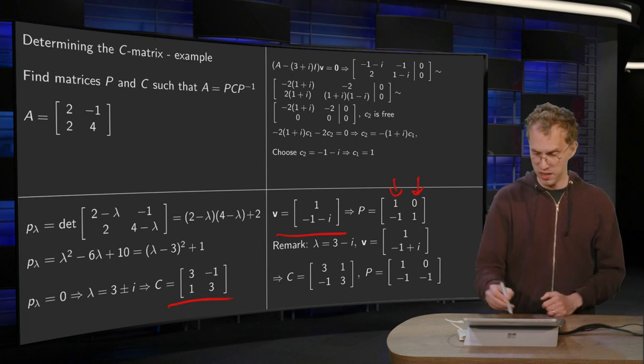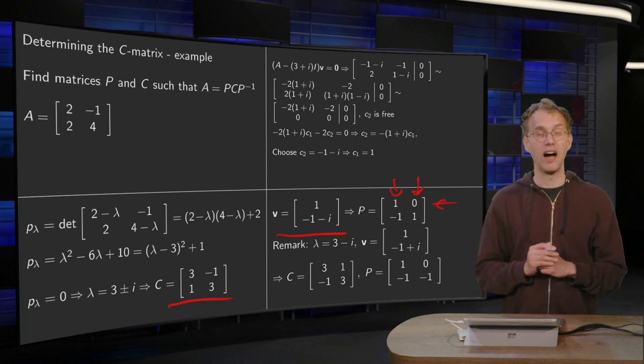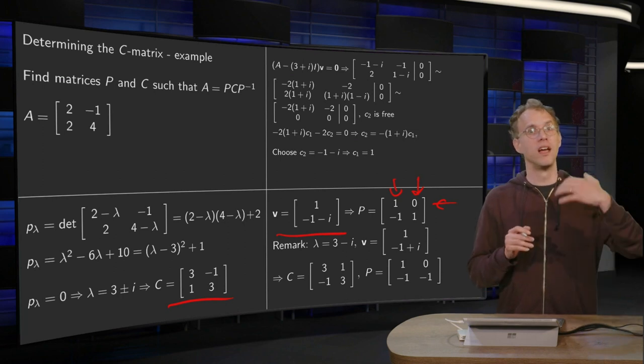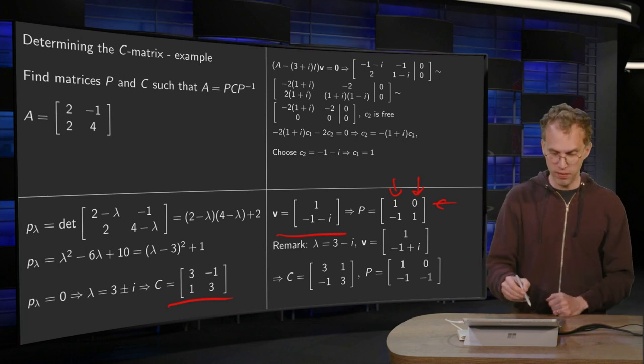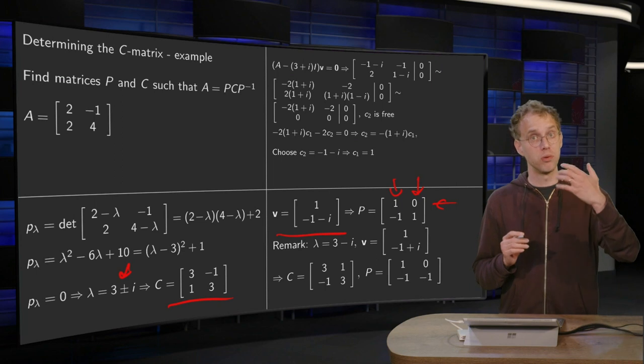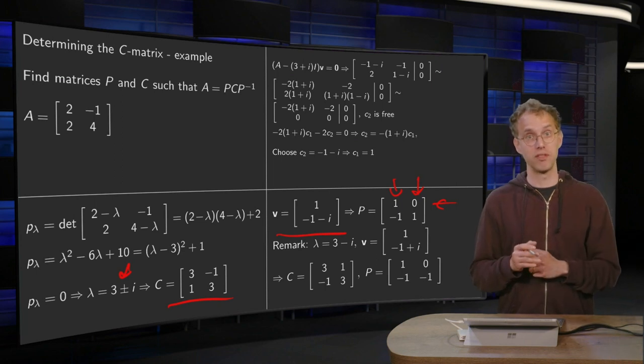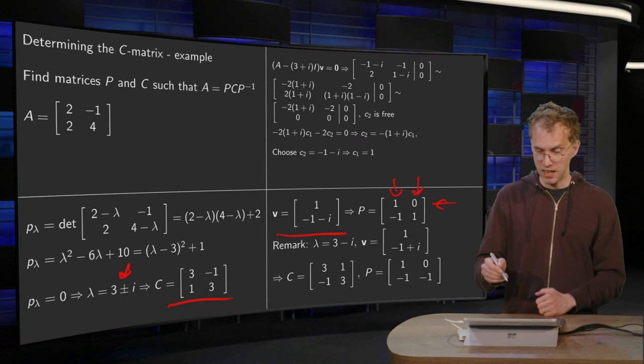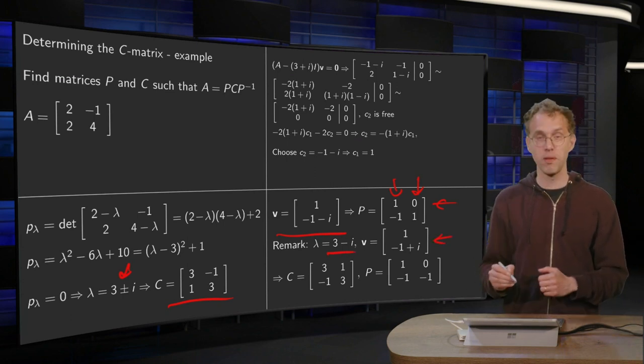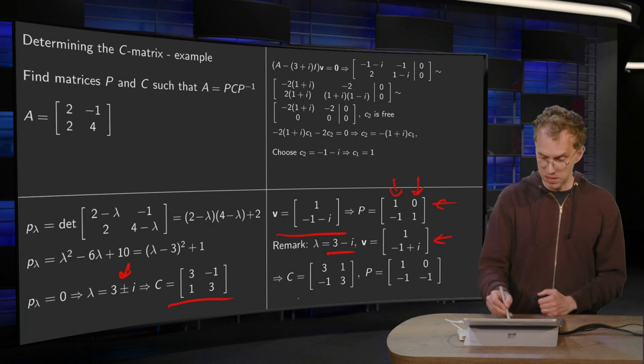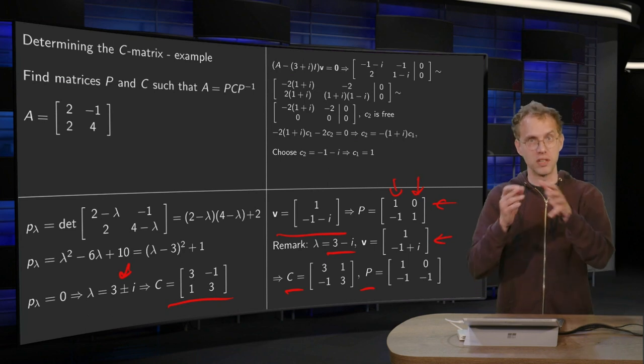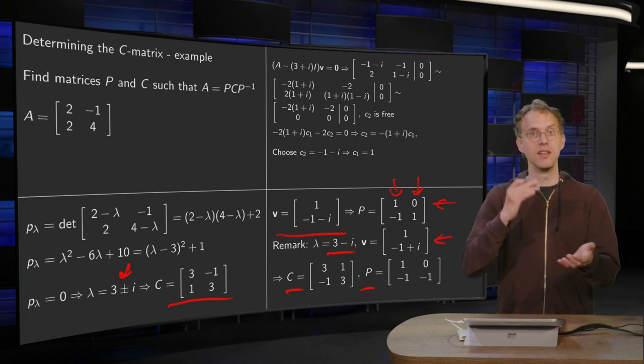Now we have our C and our P. And we have A equals PCP inverse. Now, one final remark. We made some choice here where we put a plus sign for our λ. We could also have taken λ equals 3 minus i. Well, in that case, we would have found a slightly different v as well. We would have found a slightly different C and a slightly different P. But still, you can try. Also, with this P and this C, we have A equals P times C times P inverse.